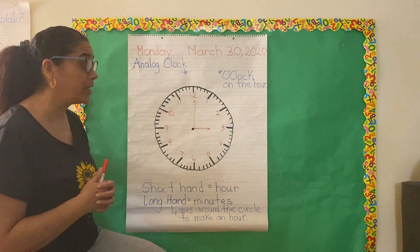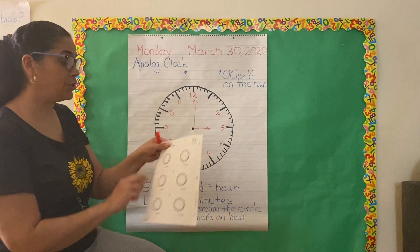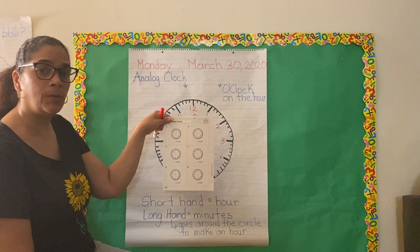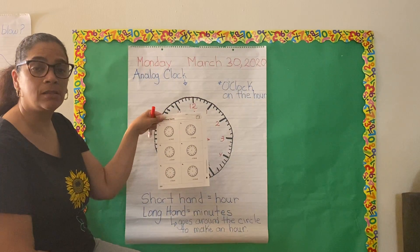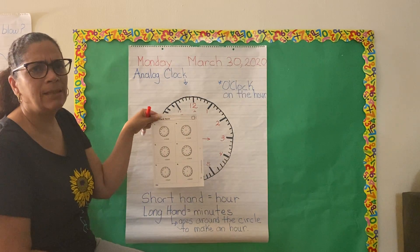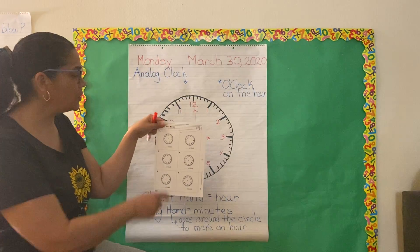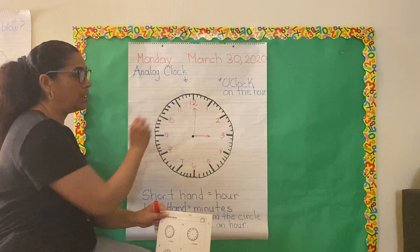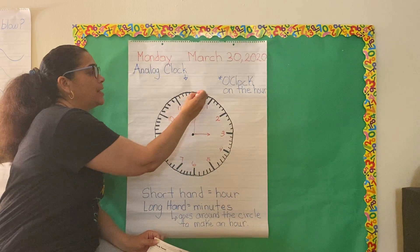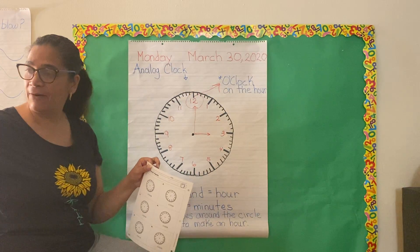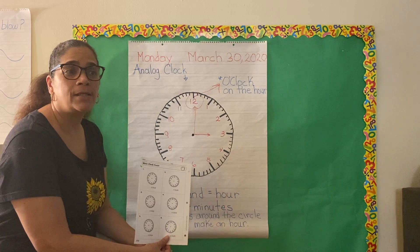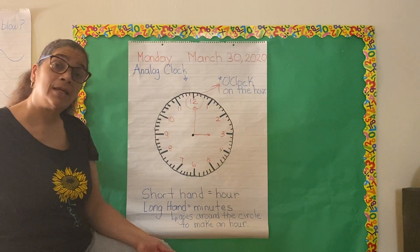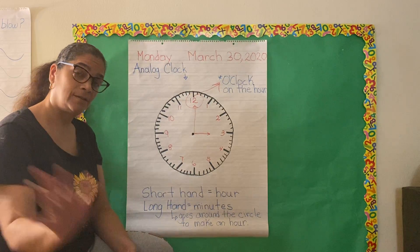Telling time can be a little tricky. For today, you will have a sheet with several clock faces, and I want you to go around and ask your parents questions. For example: 'Mom, what time do we wake up in the morning?' If she says eight o'clock, you write eight o'clock and draw the hands — the short hand on the eight and the long hand on the 12, because remember 12 means o'clock. Ask your parents about several times during the day and fill in your boxes on your math worksheet. If you have any questions, send them to me on HiMama. Okie dokie, bye-bye.